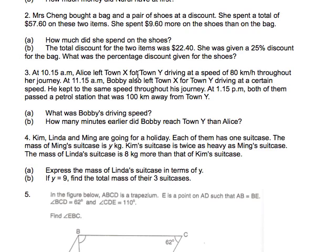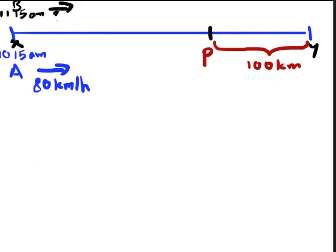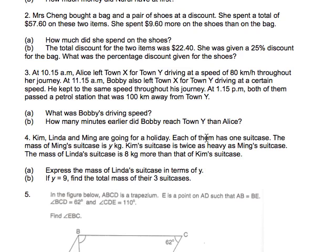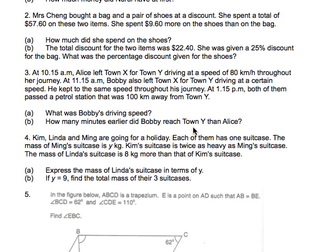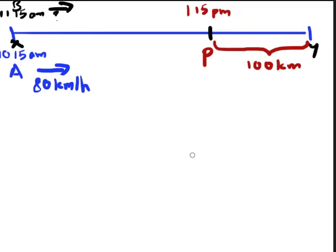We know that Alice left town X for town Y driving at a speed of 80 km per hour. And at 11:15, Bobby was blah, blah, blah. What was Bobby's driving speed? So what time did he reach the petrol station? He reached the petrol station at 1:15 PM. Actually, both of them did, right? Both of them passed the petrol station. So we don't know what Bobby's speed is, but we can tell something else. We can tell that Alice's time is actually 10:15 to 11:15 and she drove 80 km per hour. And that might give us a clue. Right now, I don't know, but I just think so. So I'm just going to do that. I'm just going to write that down.